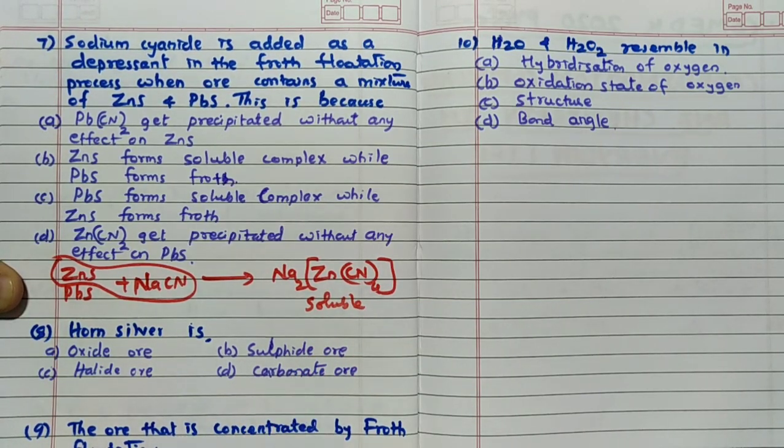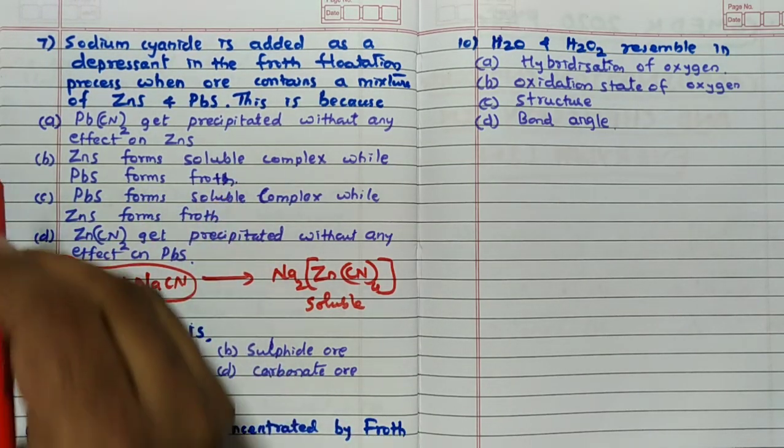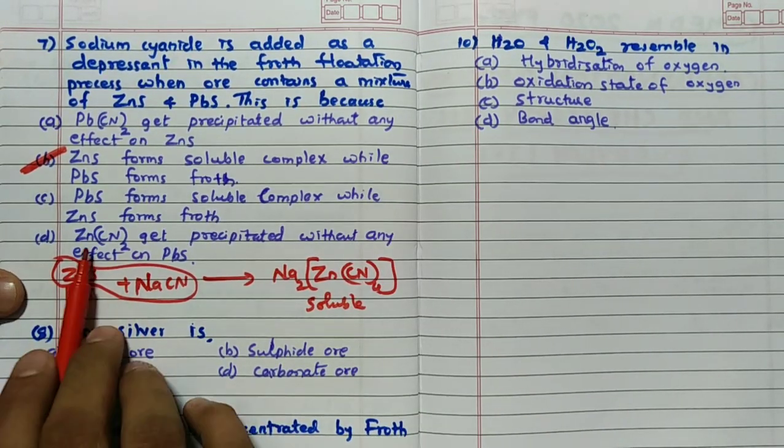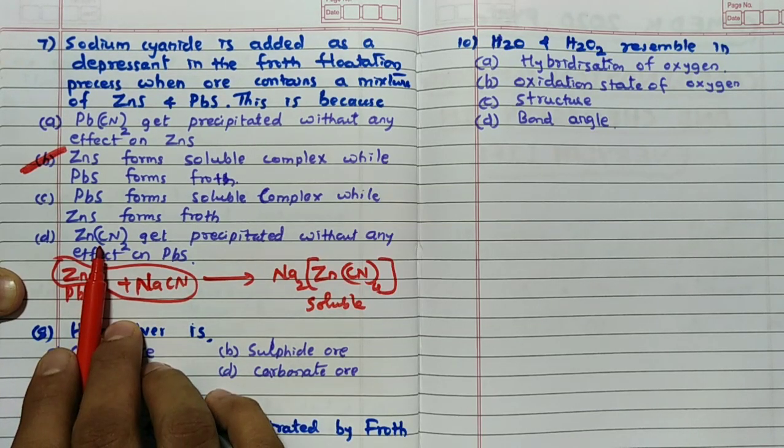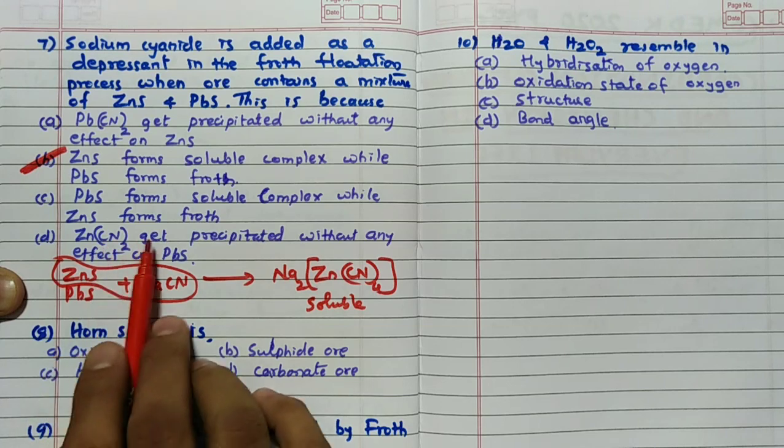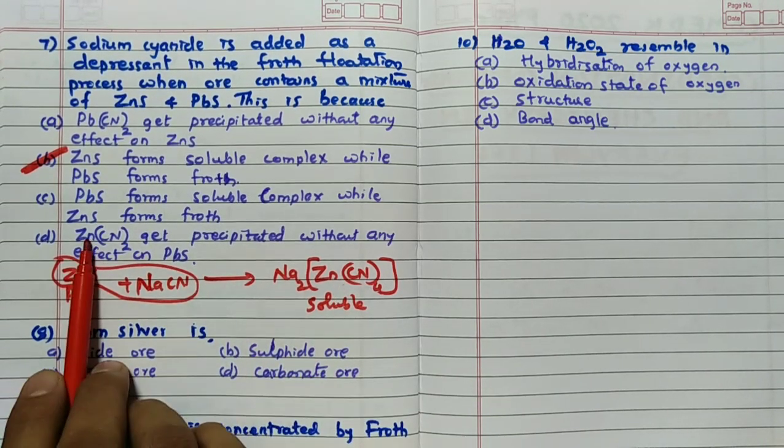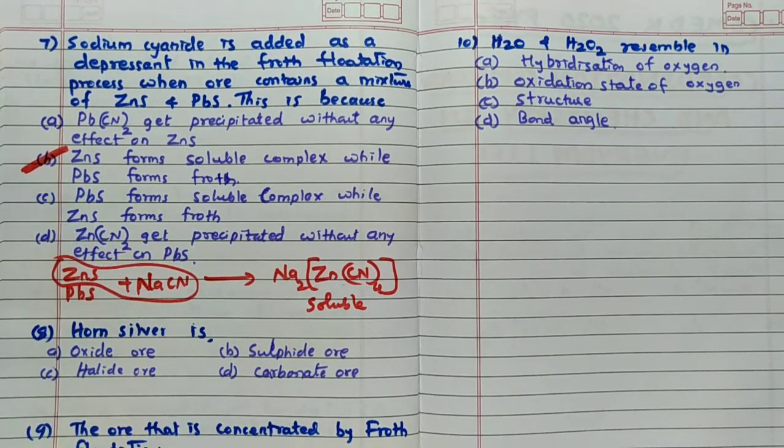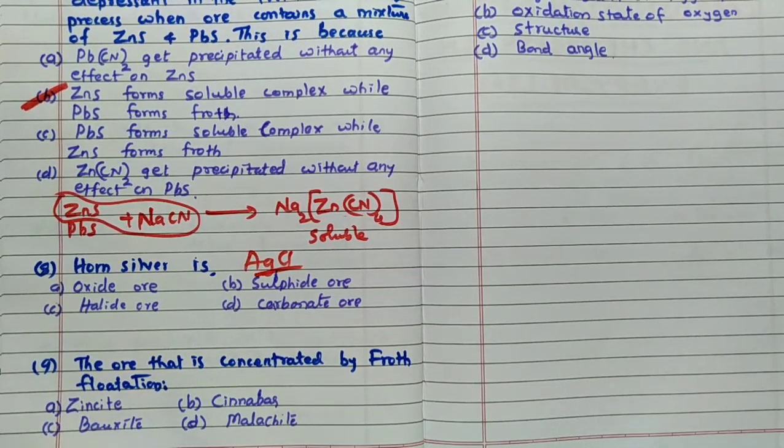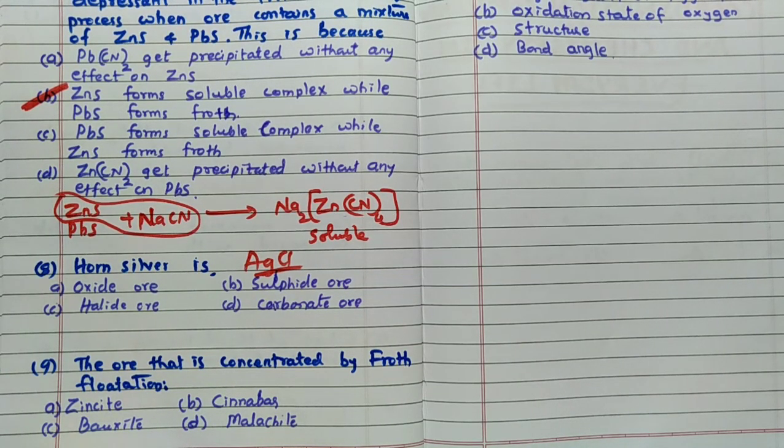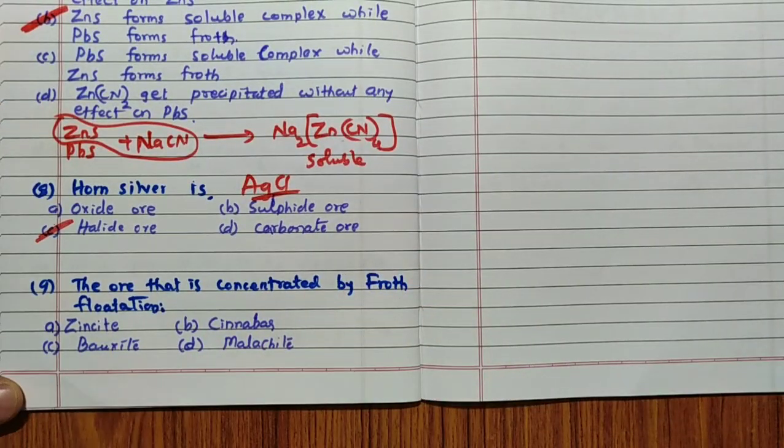Remember that this is water soluble so ZnS forms soluble complex while PbS forms froth is the correct answer B. Horn silver is once it was asked horn silver is known as AgCl. You have to know this, there is no other way. Horn silver is AgCl. AgCl means halide ore is the answer here.